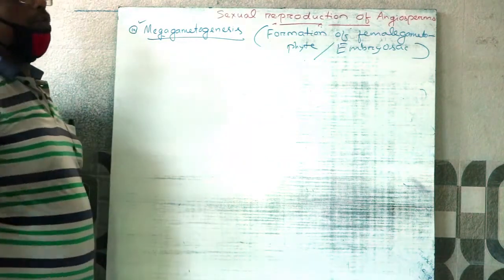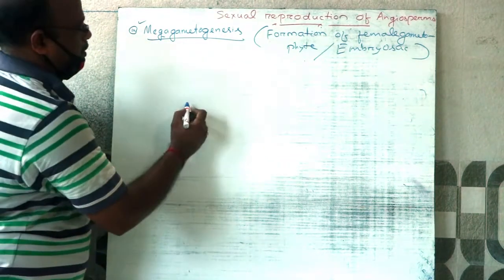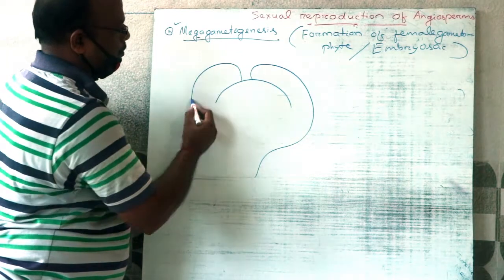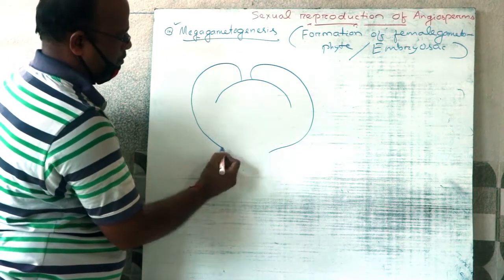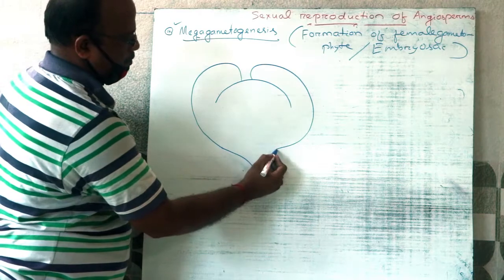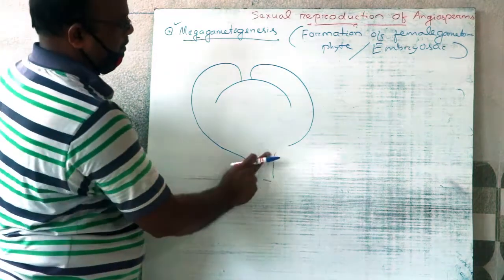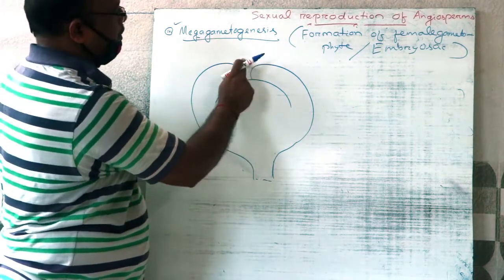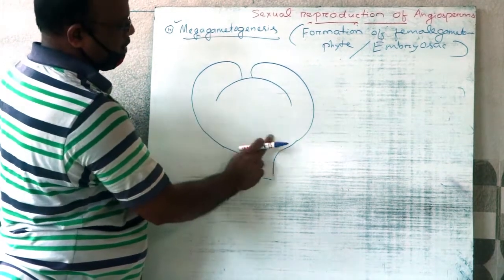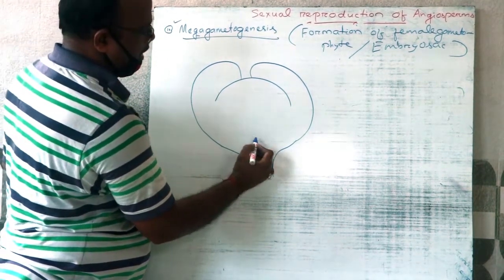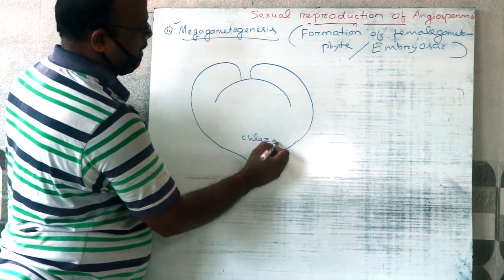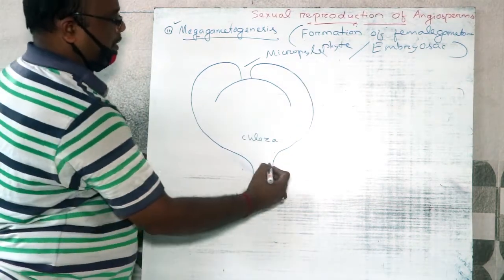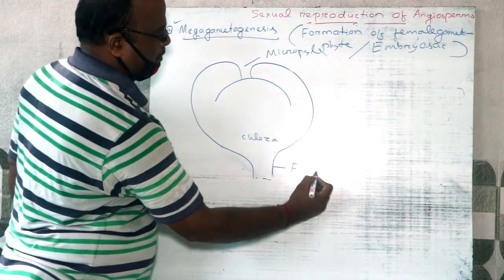Megagametogenesis is expressed inside the ovule of angiosperms. The ovule has a central part called nucellus and a covering called integument. The tip narrow portion is called micropyle, the other end is called chalaza, and the stalk of the ovule is known as funicle.